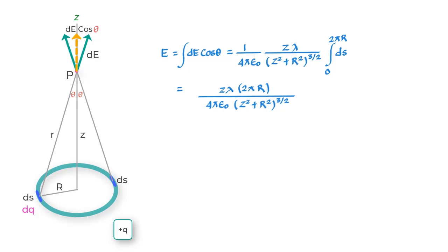Lambda can also be written as Q upon 2πR because 2πR is the circumference of this ring and Q is the total charge on the ring. If we substitute this value in this equation, what we get is this expression.